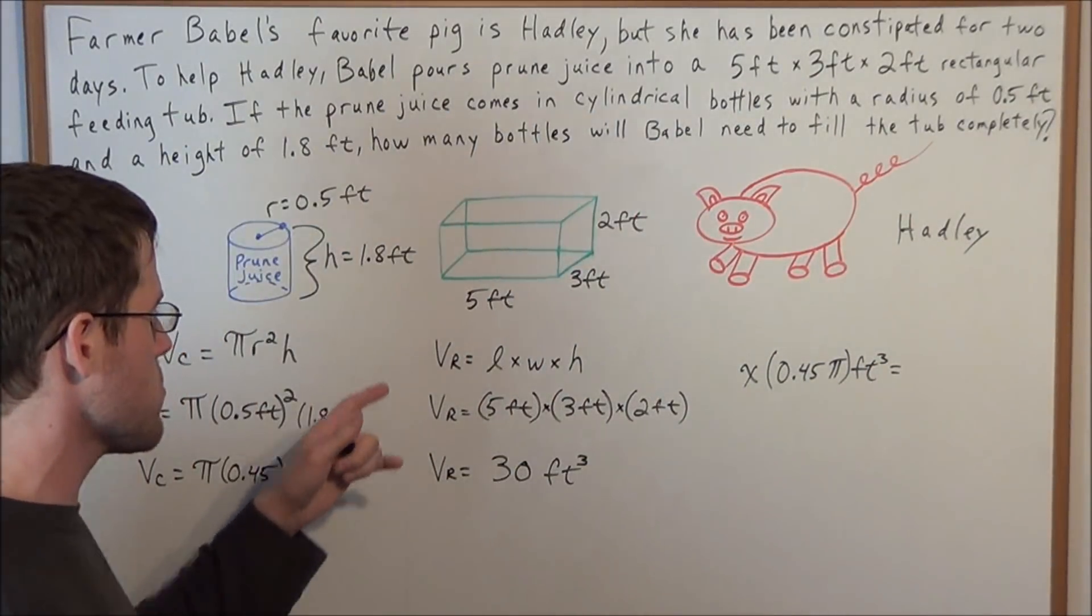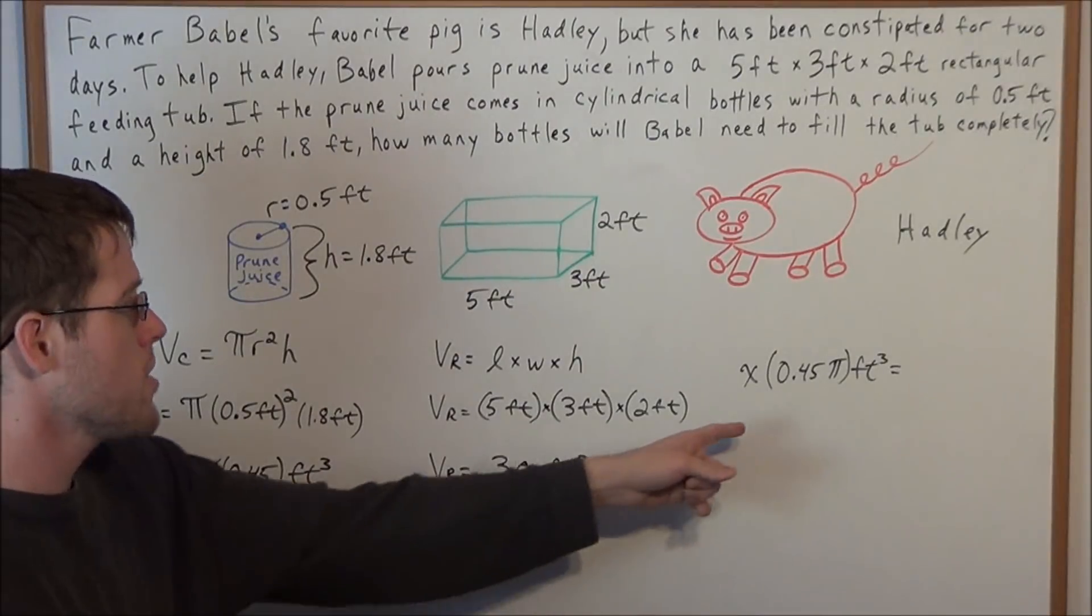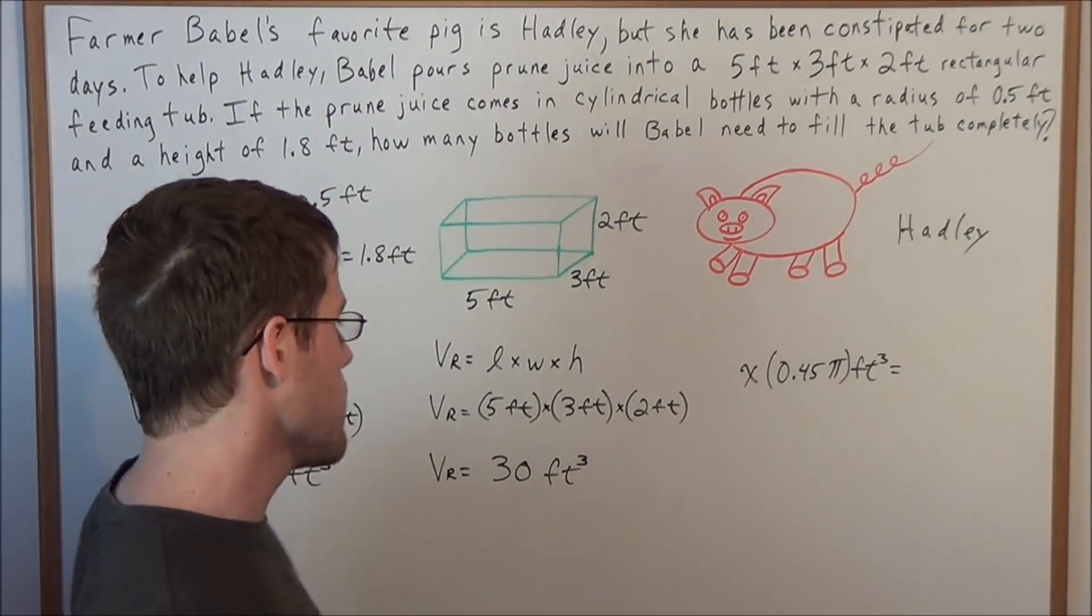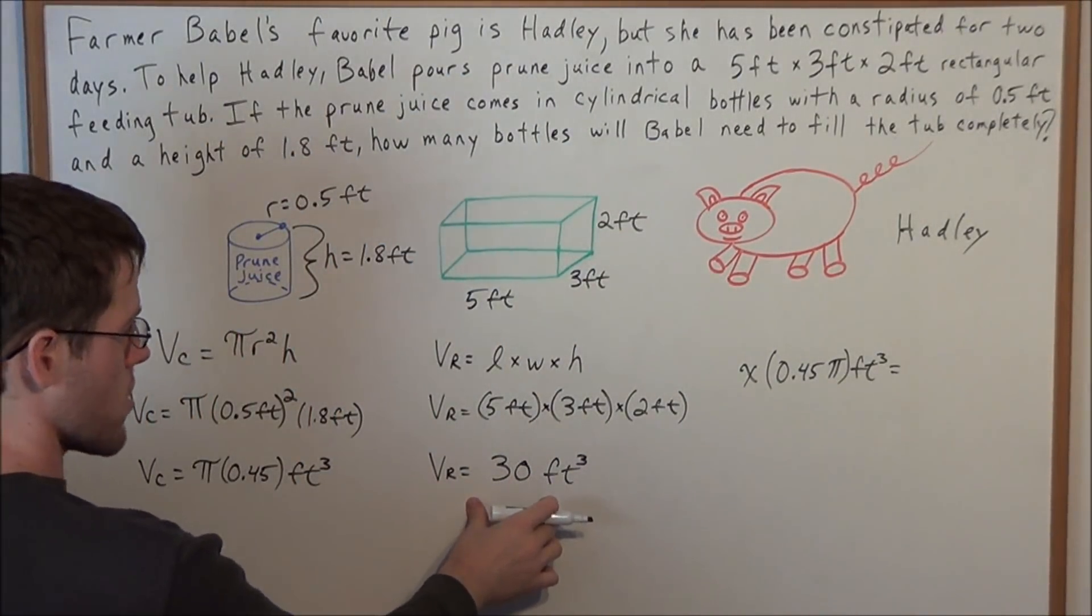And we'll set this equal to the volume of the tub, because we want to know how many bottles we're going to need to fill the tub. Well, we know the volume of the tub is 30 cubic feet.